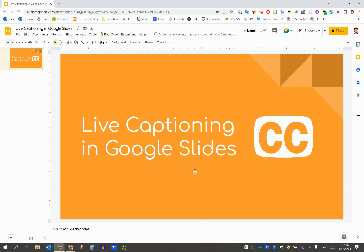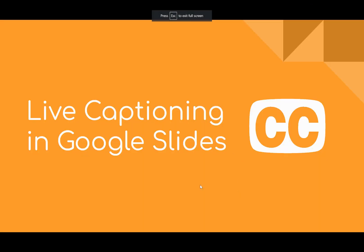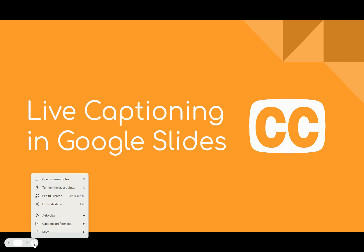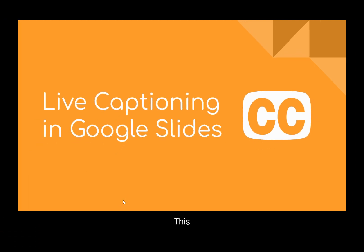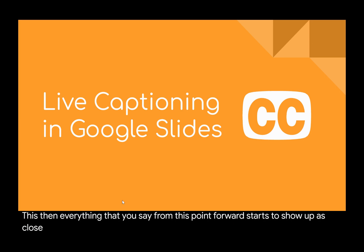The next time you are in Google Slides and you go to present — which I'm going to do now with the slideshow feature — once you pull up your slide deck, go down to the bottom left-hand corner and click the jelly bean button for more options. Go over to caption preferences and you'll notice that you can toggle on captions. This is English language only at this point, but once you click this, everything that you say starts to show up as closed captioning down at the bottom of the slide.